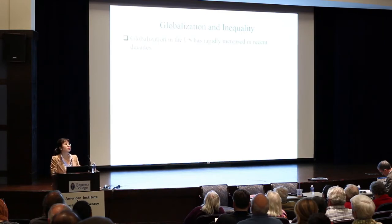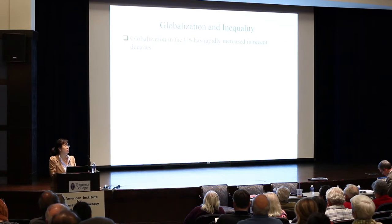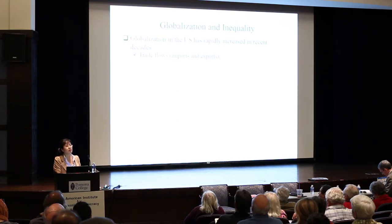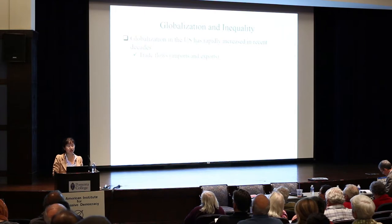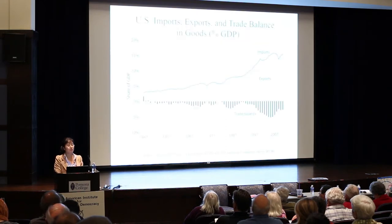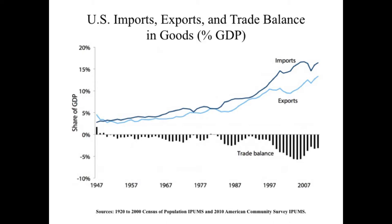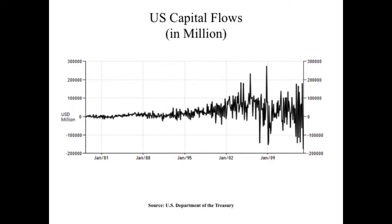How is globalization related to this inequality? Not only deindustrialization, but globalization in the United States has also rapidly increased in recent decades. Globalization, by definition, is the increased integration of trade, capital, and economies in the world. Trade flows in the United States have increased, as have capital flows and foreign direct investments. This graph shows US imports and exports and trade balance in goods as a share of GDP — both imports and exports have increased dramatically. And this graph shows US capital flows, with more inflows and outflows of capital in the United States in recent decades.